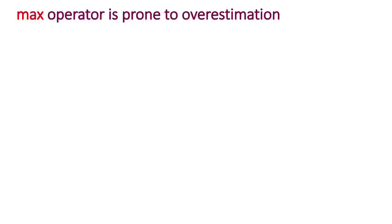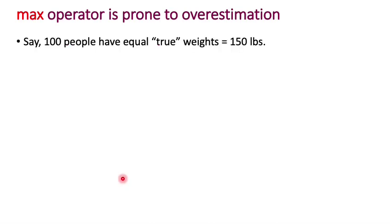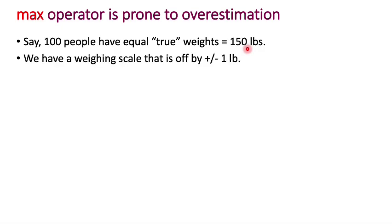To see why, let's look at a simpler example outside the context of reinforcement learning. Let's say we are trying to measure the maximum weight of 100 people. Let's look at the case where all 100 people have equal true weights — 150 pounds. We are going to make measurements of those weights with a weighing scale that is off by plus or minus one pound, with a standard deviation of one pound. As long as there is some kind of symmetric noise, the weights are as likely to be below 150 pounds as they are to be above 150 pounds.